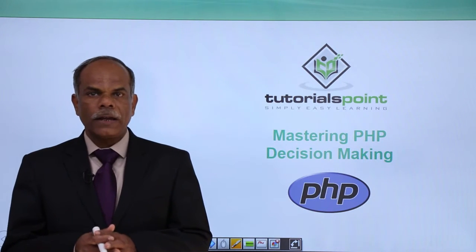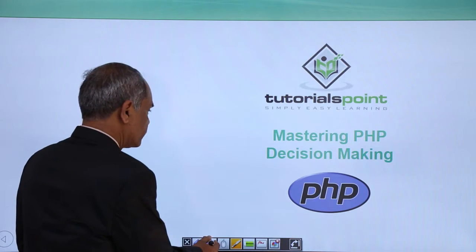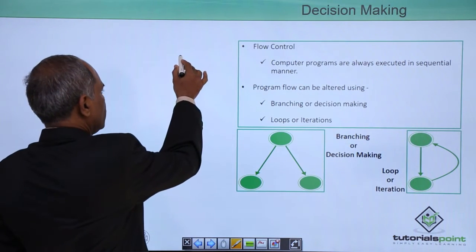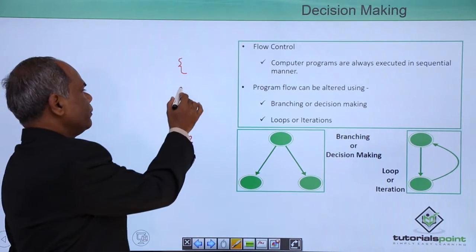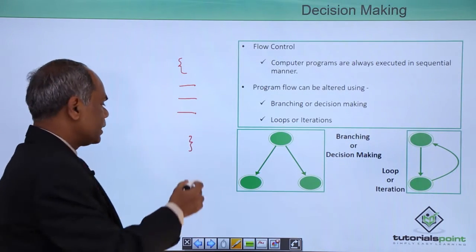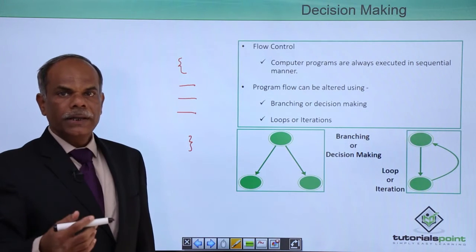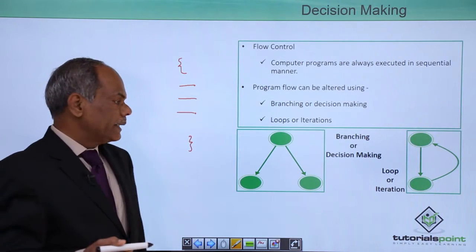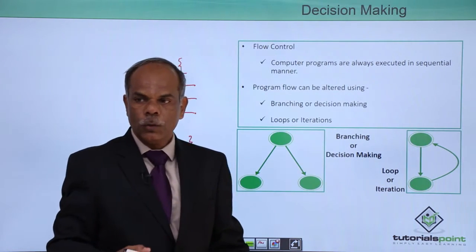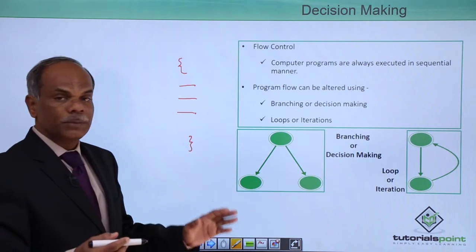Hello friends. In this video we shall have a look at the different decision making statements that are available in PHP. Computer programs usually execute in a sequential order, with multiple statements executed one after the other. But every now and then, you may need the flow of the program to be diverted, and that diversion can be achieved in two ways: branching and iteration or looping. We will look at the different branching or decision making statements in PHP.